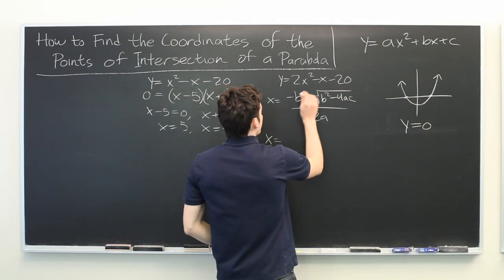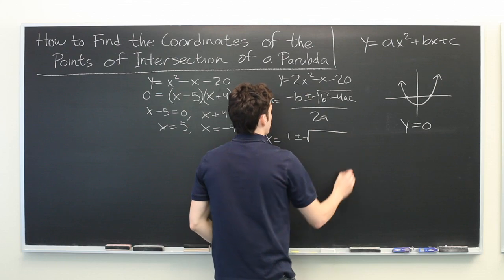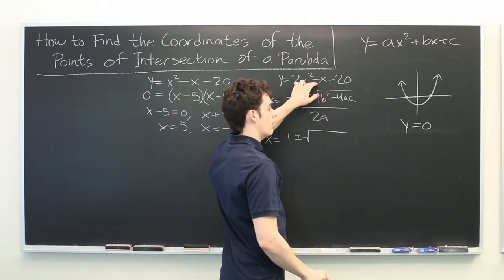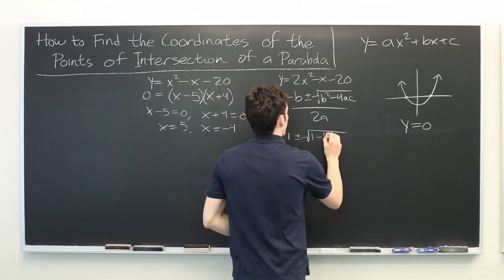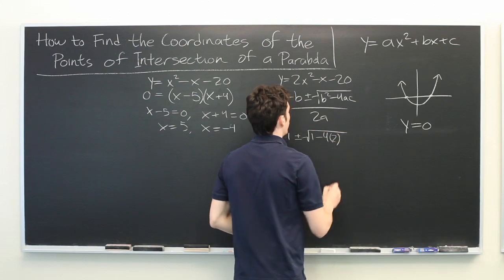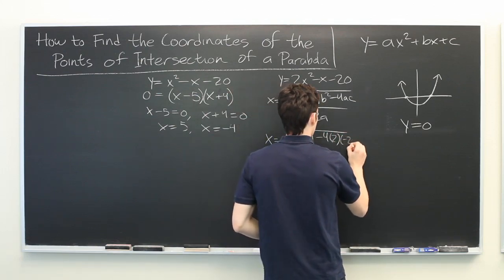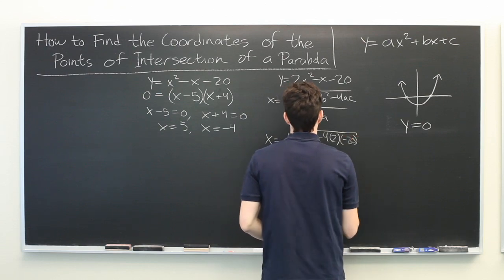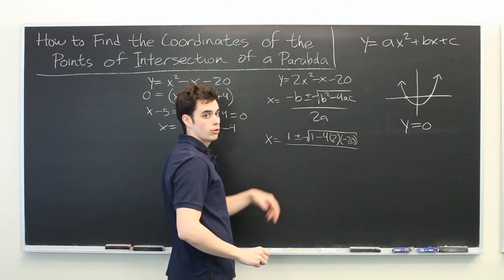So negative b we get 1 plus or minus b squared. Negative 1 squared is 1. 4 times a, a is 2, and c is negative 20. All this is over 2 times a. 2 times 2 is 4.